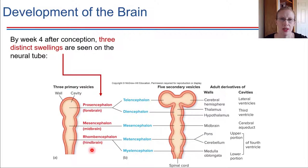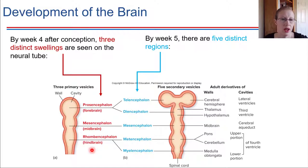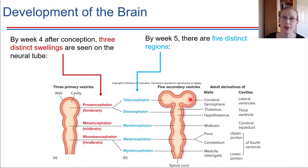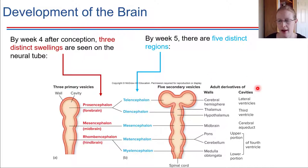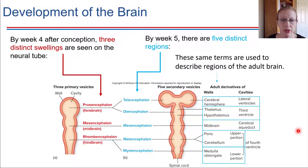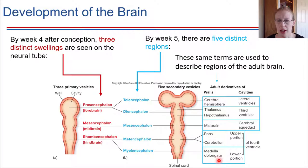Just keep in mind, these are all set in place very early on. Going forward just one more week — by week five — we've developed some additional swellings. The forebrain ends up splitting into different regions: we have a telencephalon and a diencephalon. The telencephalon is what will become the cerebral hemispheres. Most of this chapter is going to be focused on the adult brain and its different regions. In the adult brain, we'll start with the cerebral hemispheres, then move down to the thalamus and hypothalamus, which are all part of the diencephalon, and work our way down talking about what each of these regions do.